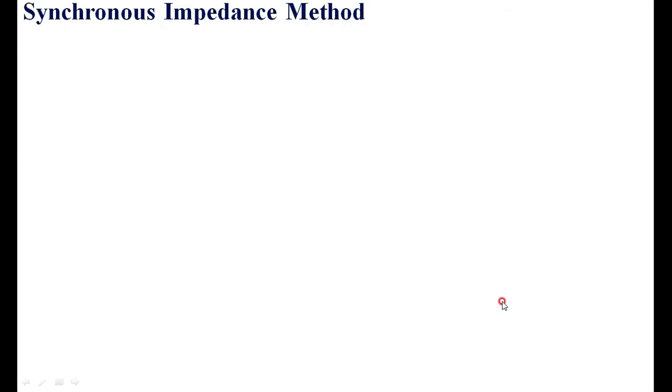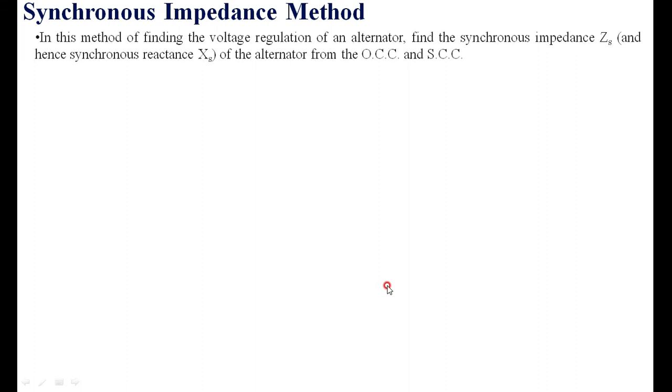First, we will go into the synchronous impedance method, also called the EMF method of determining the voltage regulation. In this method, the objective is to determine the synchronous impedance. Thereby, you have to find out the synchronous reactance by subtracting the resistance from the synchronous impedance.